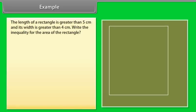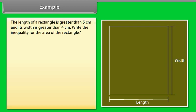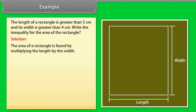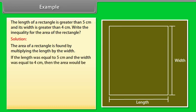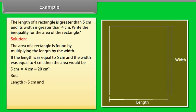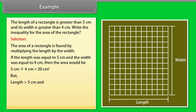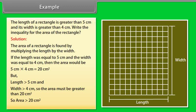Example: The length of a rectangle is greater than 5 cm and its width is greater than 4 cm. Write the inequality for the area of the rectangle. The area of a rectangle is found by multiplying the length by the width. If the length was equal to 5 cm and the width was equal to 4 cm, then the area would be 5 × 4 = 20 cm². But since the length is greater than 5 cm and the width is greater than 4 cm, the area is greater than 20 cm².